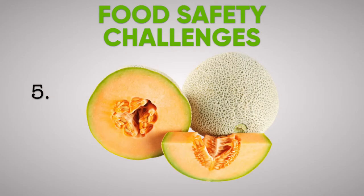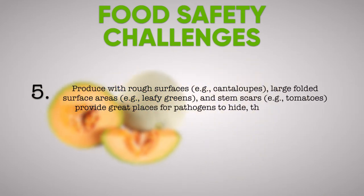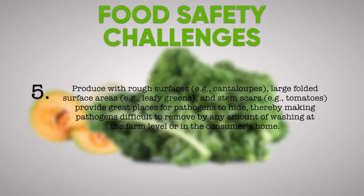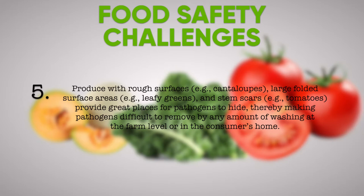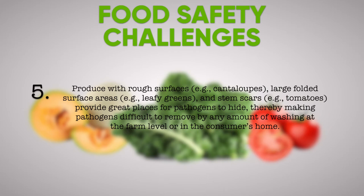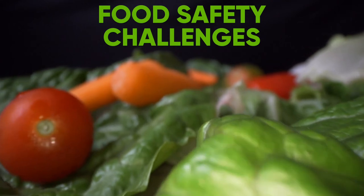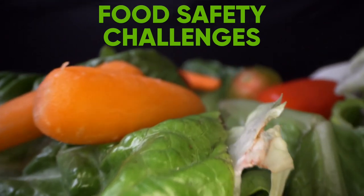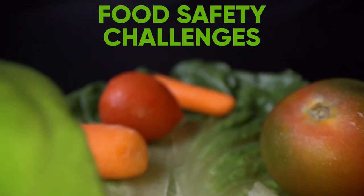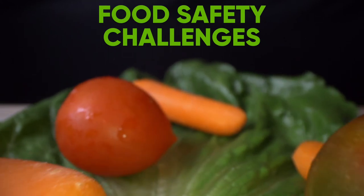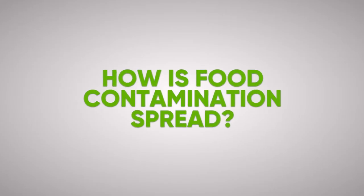5. Produce with rough surfaces, large folded surface areas, and stem scars — such as tomatoes — provide great places for pathogens to hide, thereby making pathogens difficult to remove by any amount of washing at the farm level or in the consumer's home. For these reasons, the focus of food safety in fruits and vegetables is on preventing contamination from occurring in the first place. Remember, contamination is difficult to remove once present.